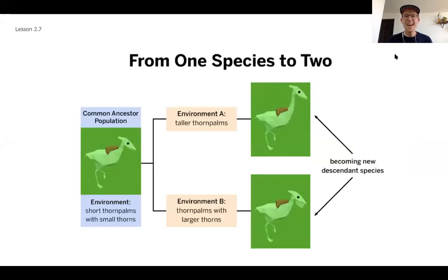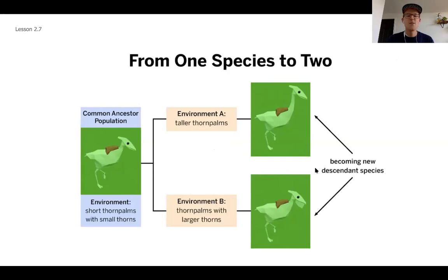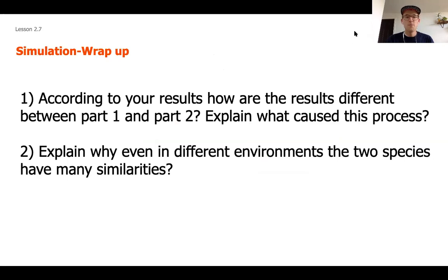What we ended up seeing is that we once had a common ancestor population with a jaw strength of five and a neck length of five. As we changed the environment, those ostrilopes ended up becoming adapted and evolved into completely different-looking species. That is evolution taking place — those descendant species are now so different that they could no longer breed with each other, but they are able to survive in their new environments.